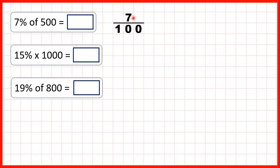7% is the same as seven hundredths, and we can find a fraction of a number by dividing by the denominator and then multiplying that answer by the numerator. So to find 7% of 500, first we can divide 500 by the denominator, so divide by 100.